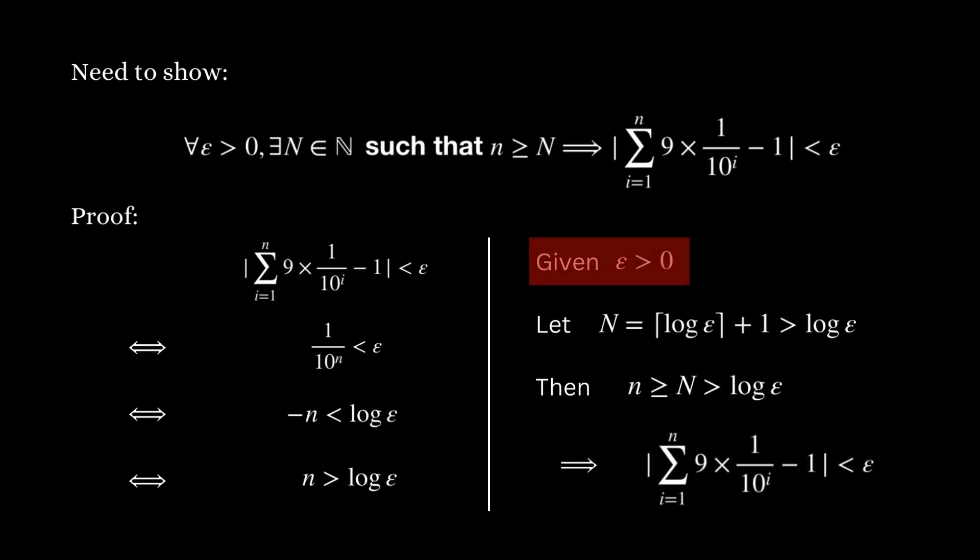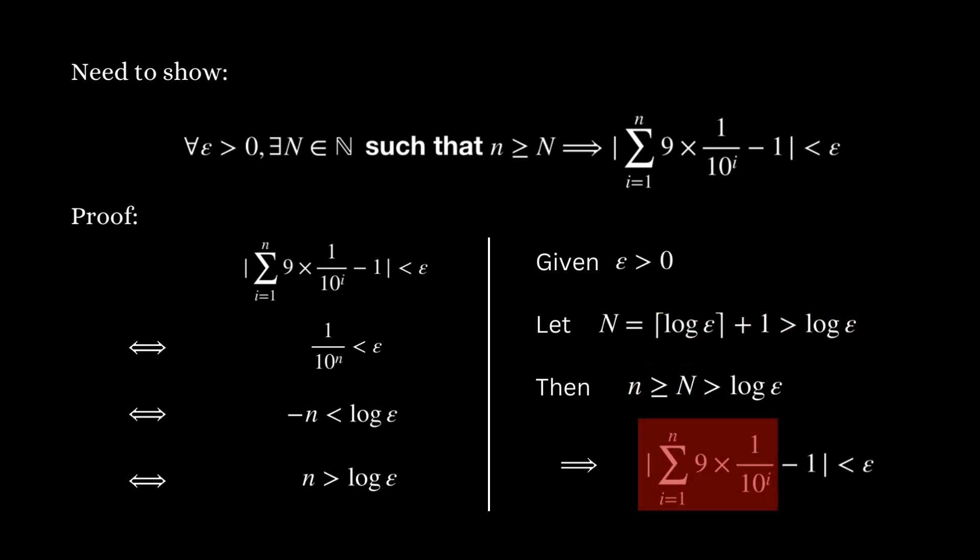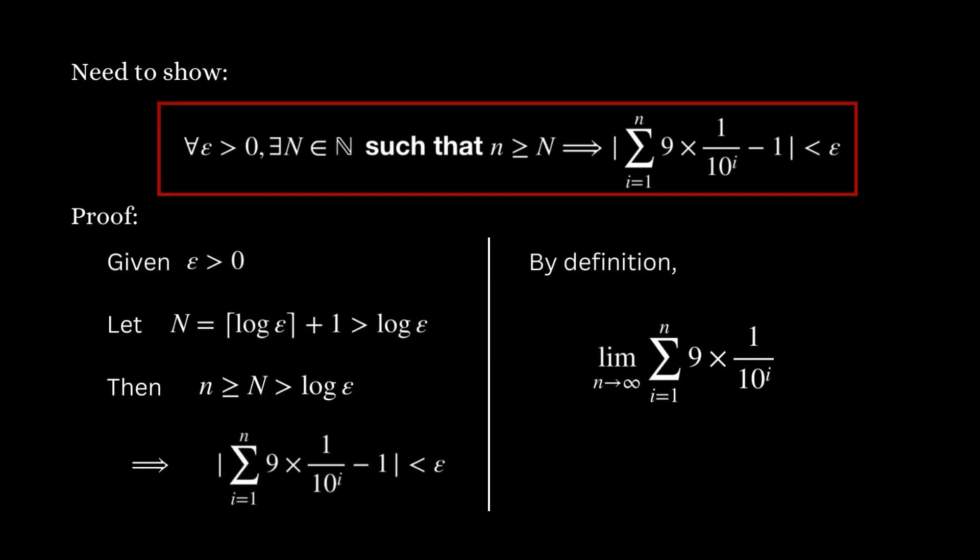Since epsilon is arbitrary, and for any such arbitrary epsilon, we are able to find a corresponding capital N by this procedure, such that whenever n is greater or equal to this capital N, the absolute difference between this expression and 1 is less than epsilon. By definition, this limit is equal to 1.